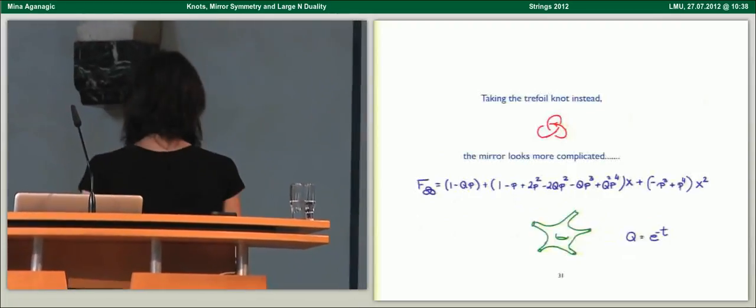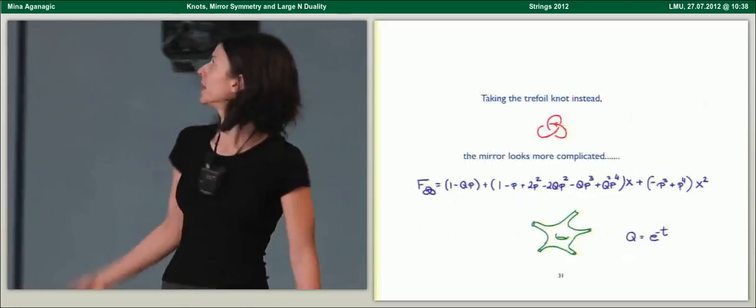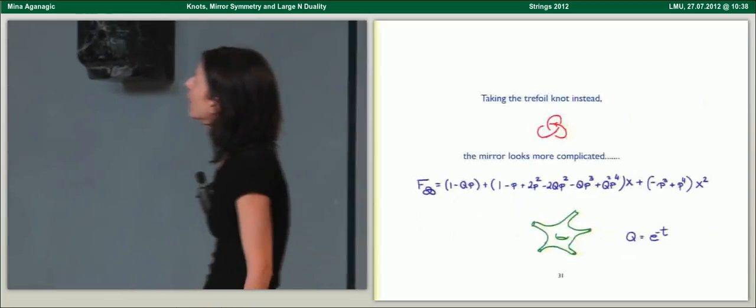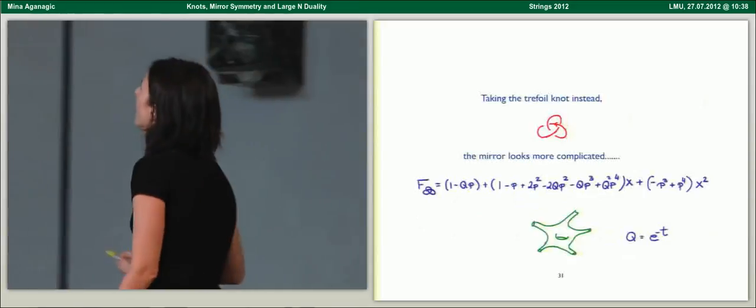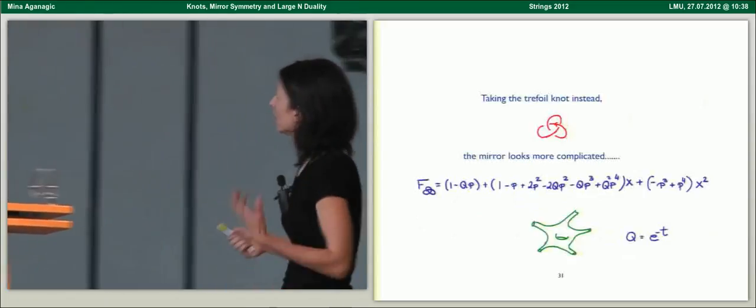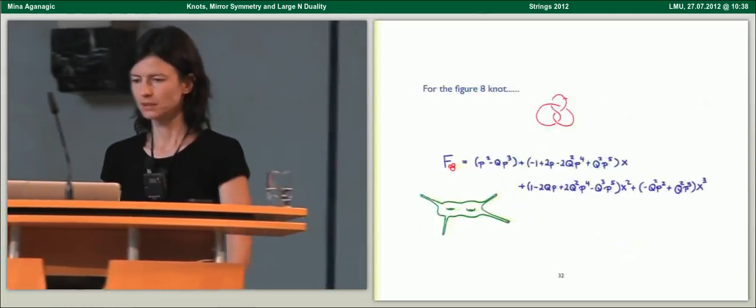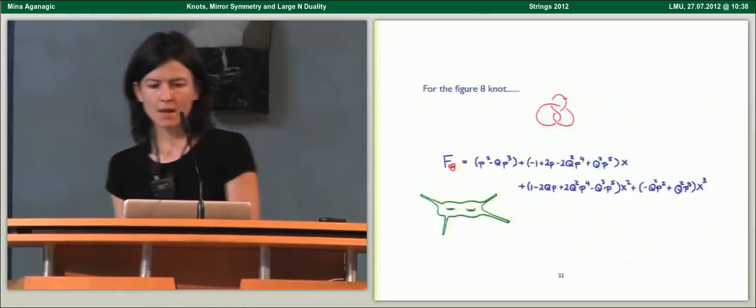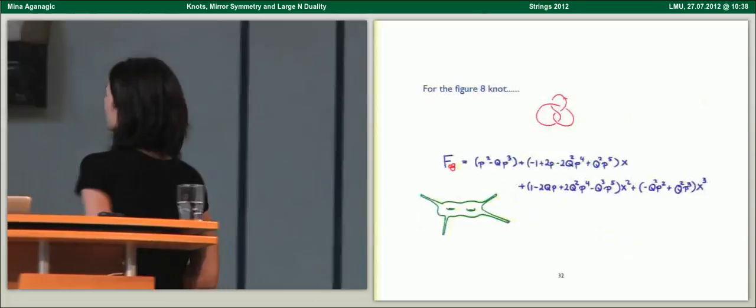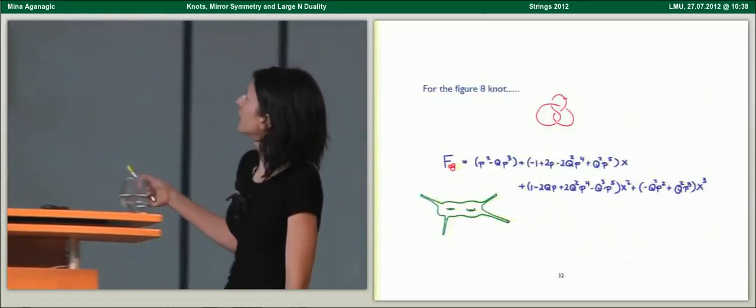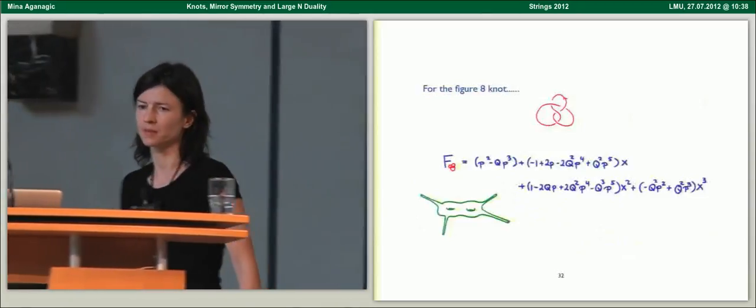If you take a more complicated knot, you'll get a more complicated answer. The next more complicated knot is the trefoil. In this case, the mirror still depends on just one complex structure parameter, but it's a genus 1 Riemann surface. It's more complicated. For the figure 8 knot, you'll get a genus 2 Riemann surface.